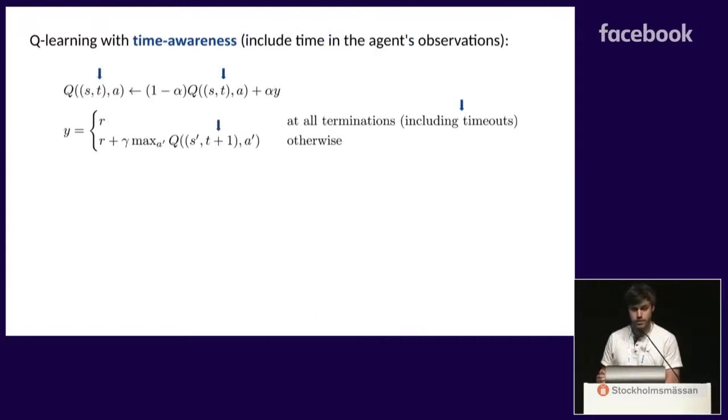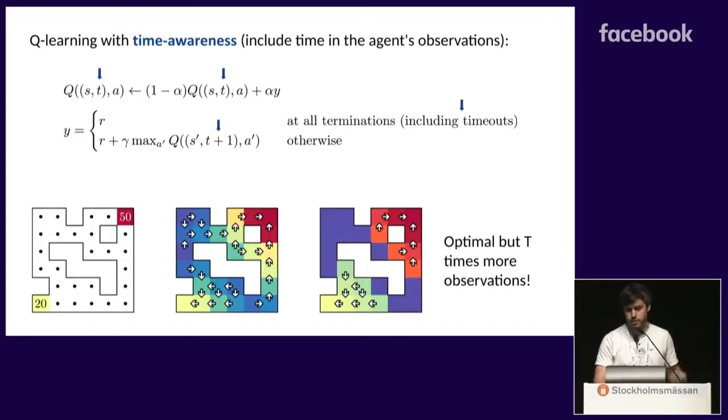Okay, so let's fix this. Let's add time in input. So for tabular Q-learning, it means that you actually have T times more possible observation now, but for a very simple case like this one, it's still tractable. And this is the policy that you learn, which is clearly optimal.